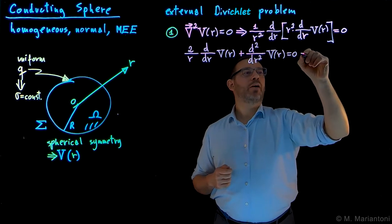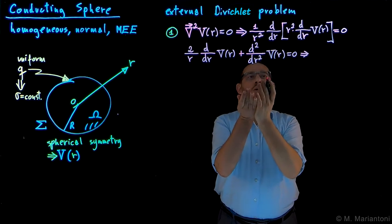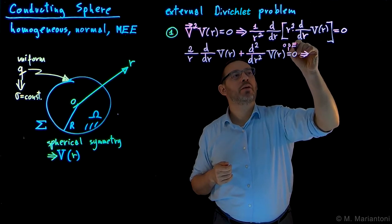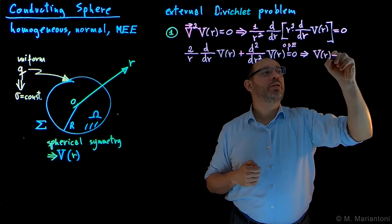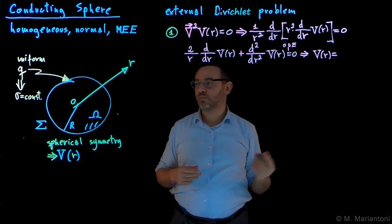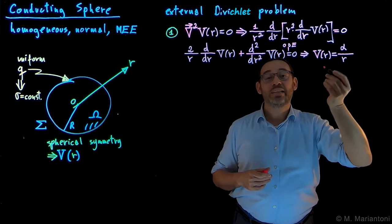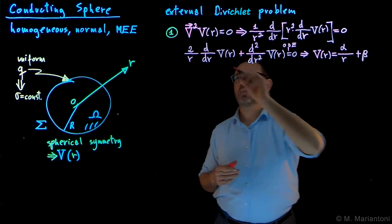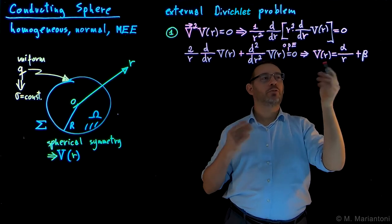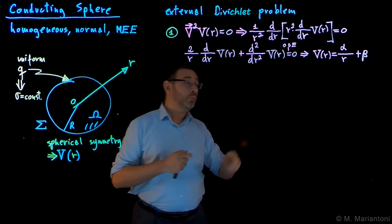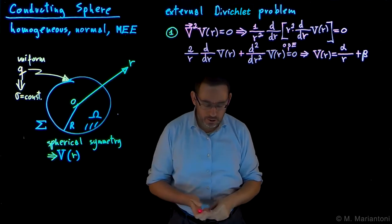A simple solution can be found by trying different solutions. This is a simple ODE — ordinary differential equation. By trying, you can eventually find that V(r) equals alpha divided by r plus beta. I need two parameters because I have a second-order operator. If you substitute this into the ODE, you will find that it equals zero. So V(r) = alpha/r + beta is the typical result for spherical symmetry. Step one of our procedure is done.